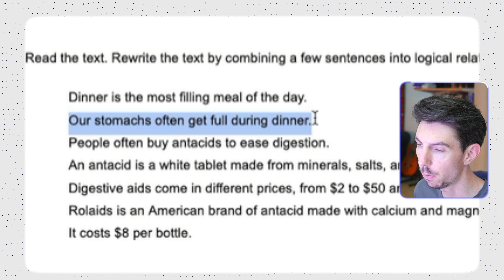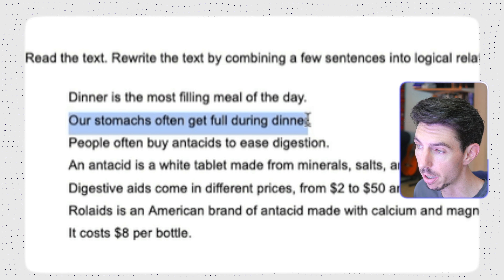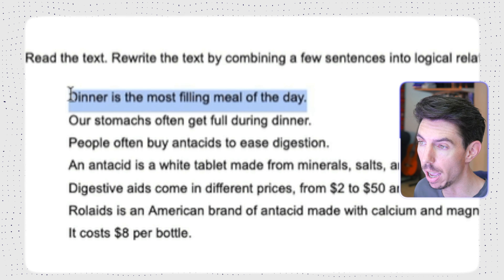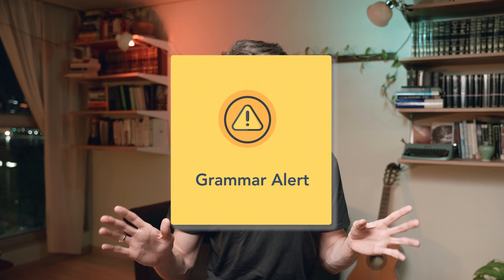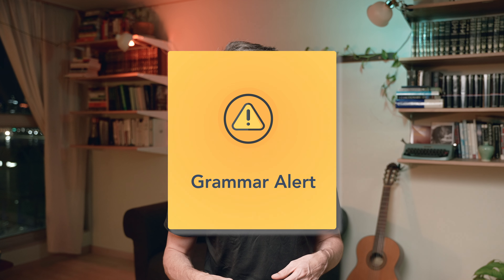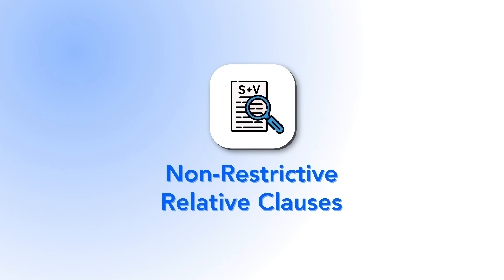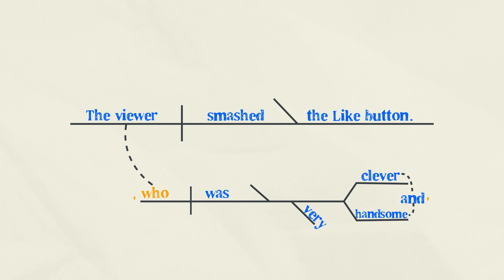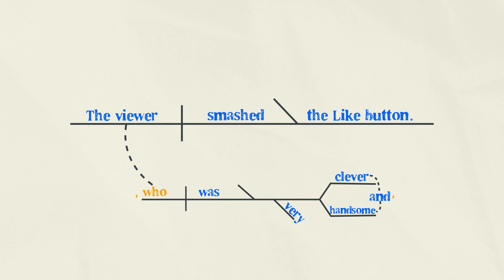We're going to make the main idea the focus of our sentence by making it independent, and get the lesser information out of the way by making it dependent. The type of dependent clause we're looking at in today's lesson — and I'm sorry for all the grammar terminology but there's really no way around it — is what are known as non-restrictive relative clauses. These are clauses that begin with a comma and a wh-word like 'which' or 'who.' They basically function like adjectives, providing some background information about something in the main sentence without drawing too much attention to itself.